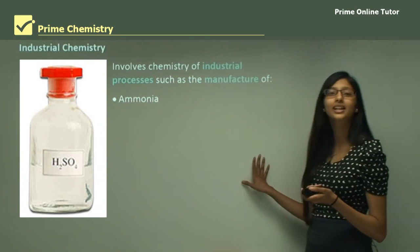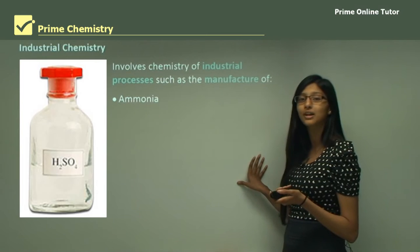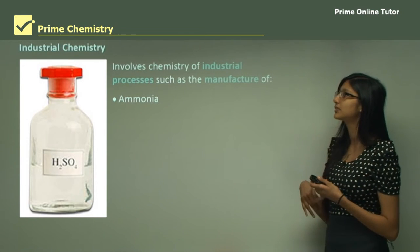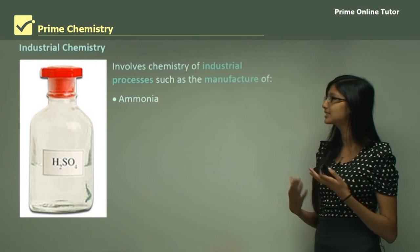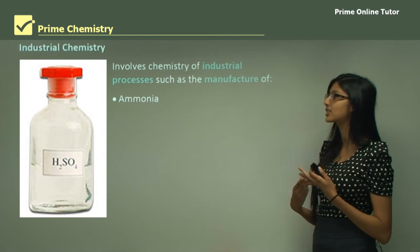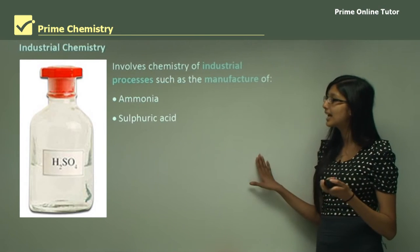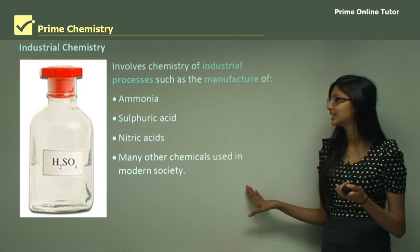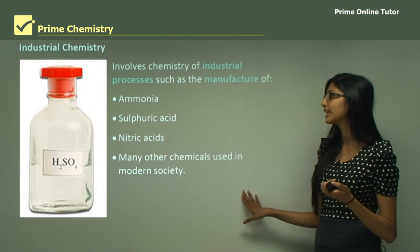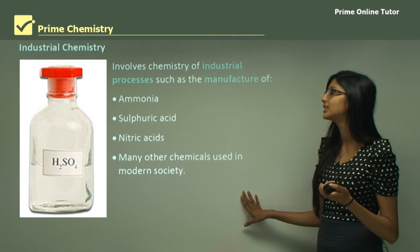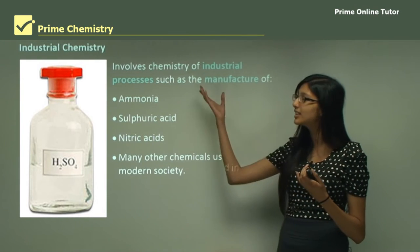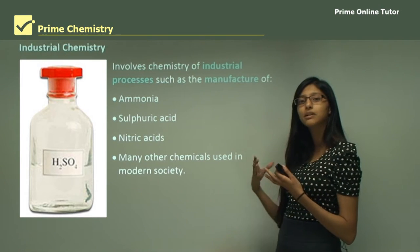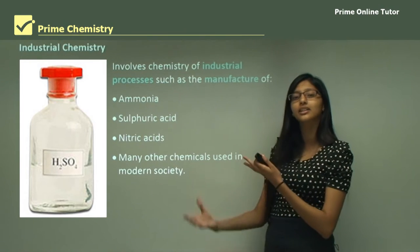Industrial chemistry involves the chemistry of industrial processes such as the manufacture of ammonia, sulfuric acid, nitric acid, and many other chemicals used in modern industry. So industrial chemistry actually makes chemicals that can be used in other industries.